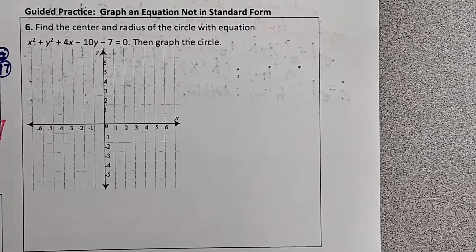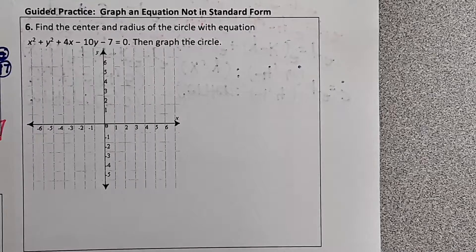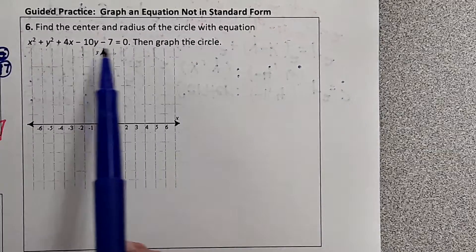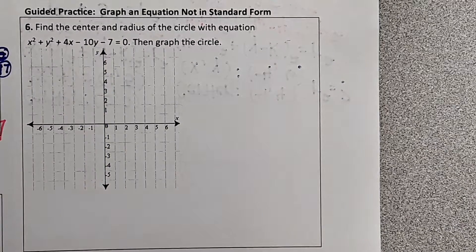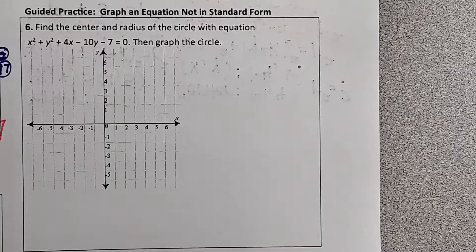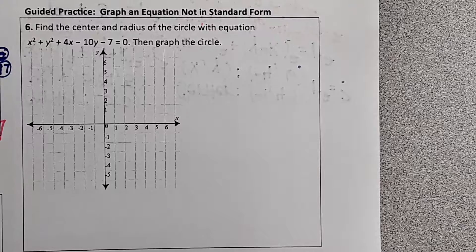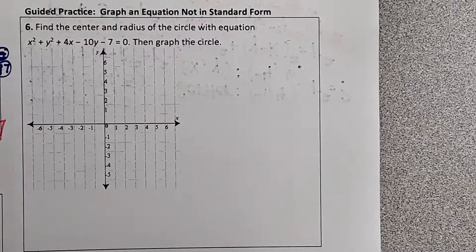Okay, so this is the last example for circle notes. Notice that this is in a little bit different form than we're used to. Usually a circle is x minus h squared plus y minus k squared equals radius squared. Well that's not in this form.